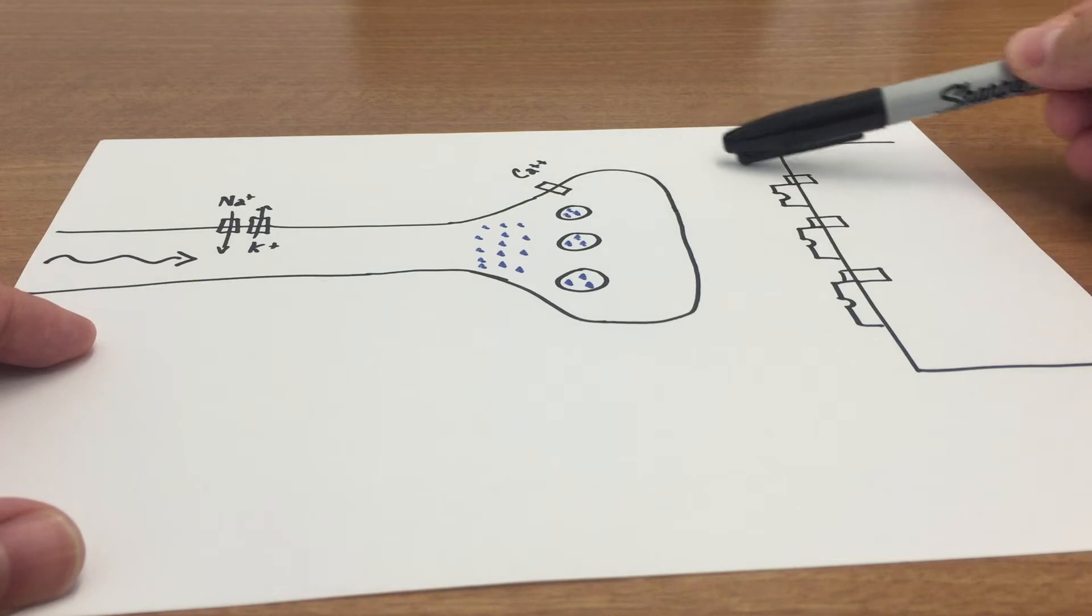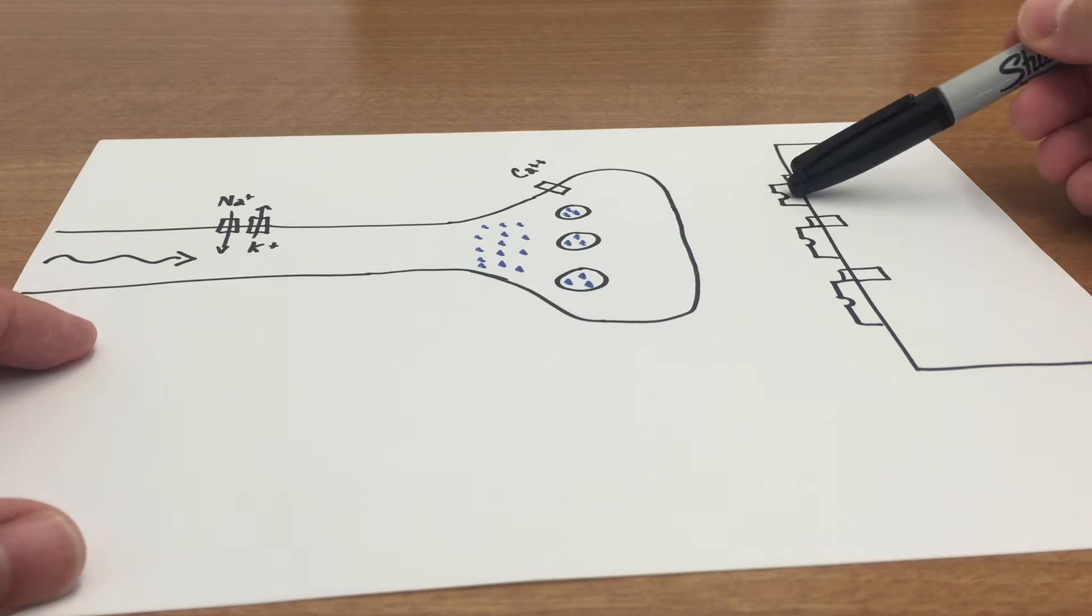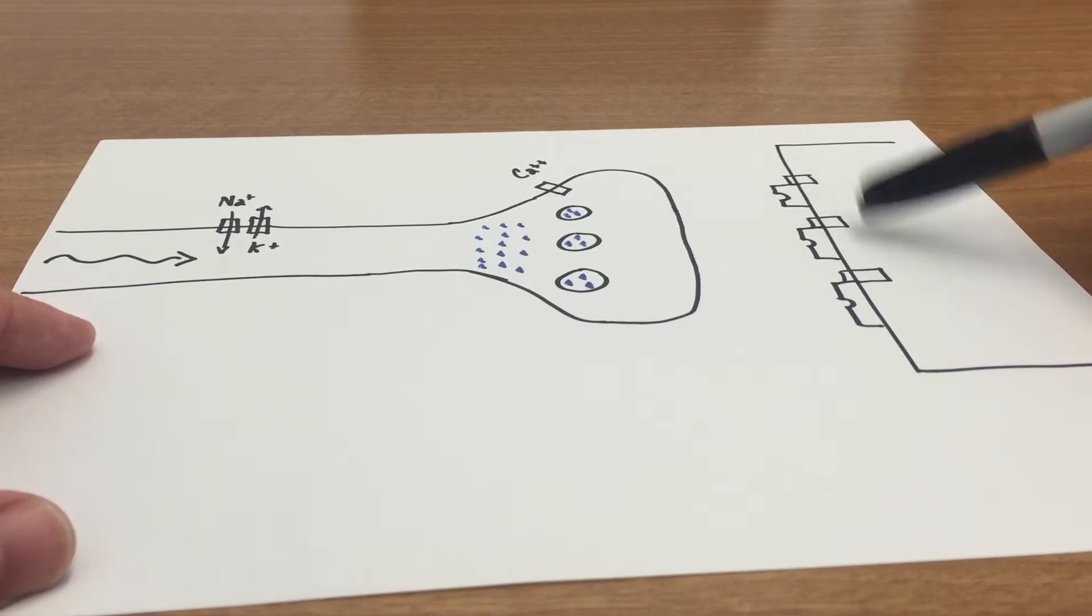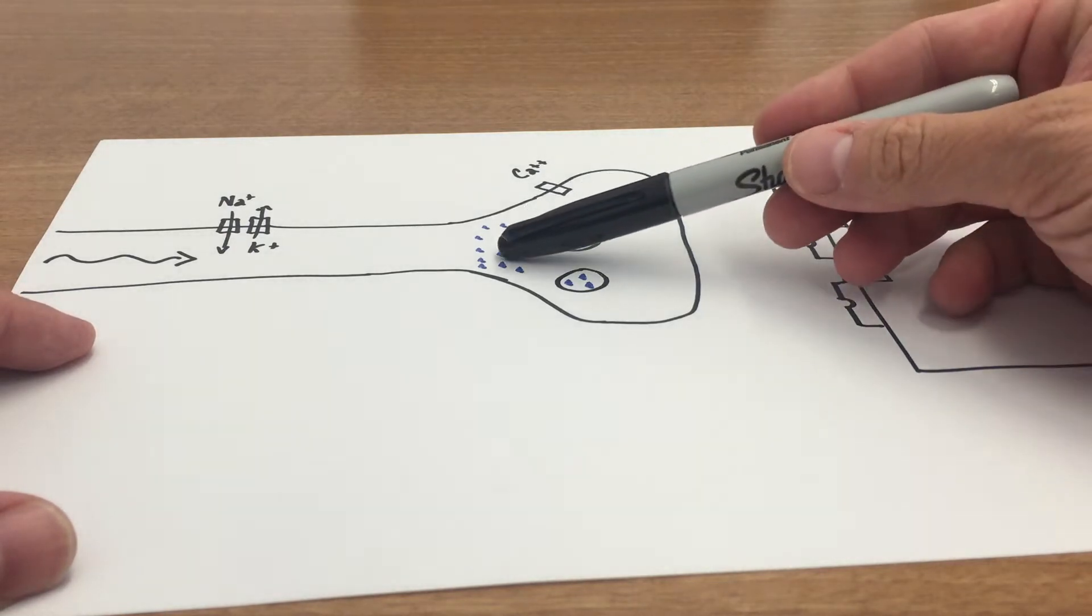I have of course the synapse or in this particular case we'd call this the end-motor plate or the neuromuscular junction, and in that junction I have motor nicotinic receptors, which are receptors for the neurotransmitter acetylcholine.